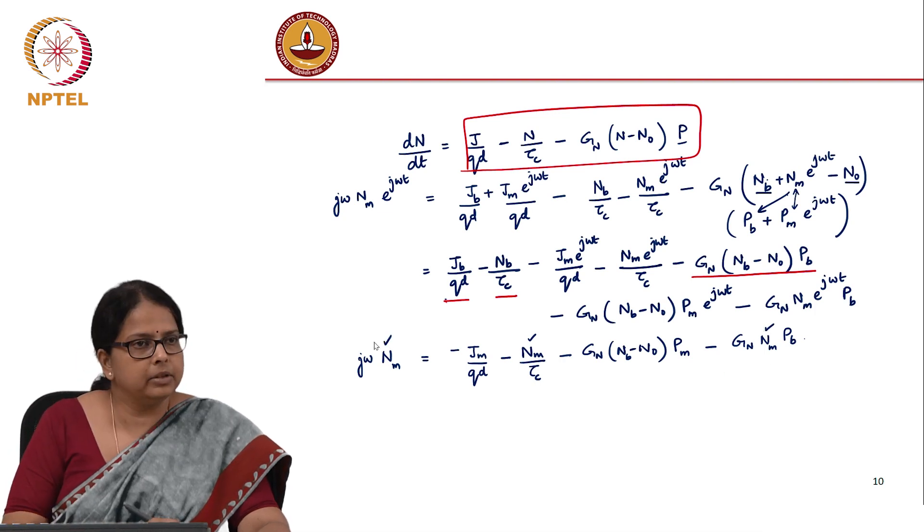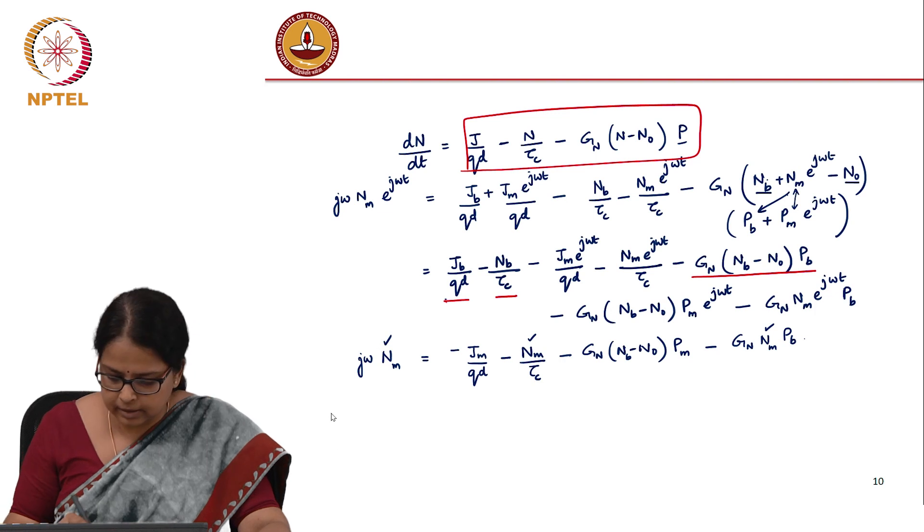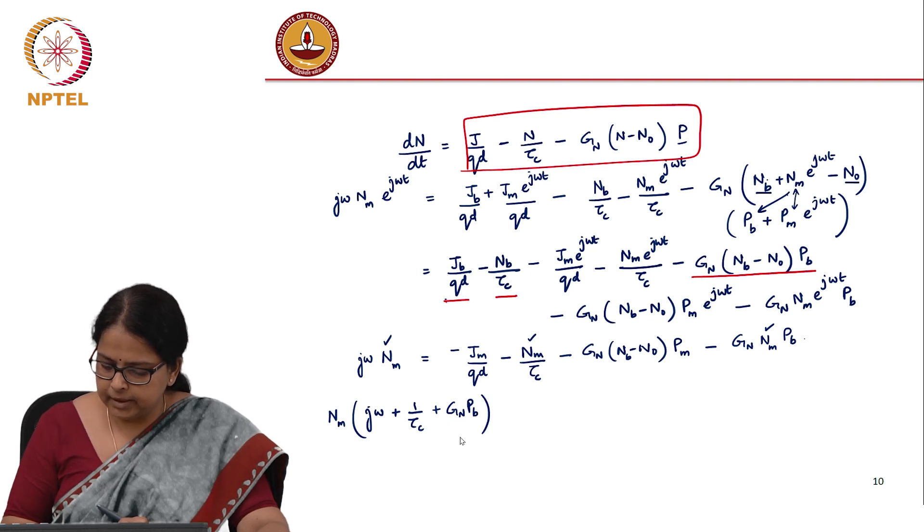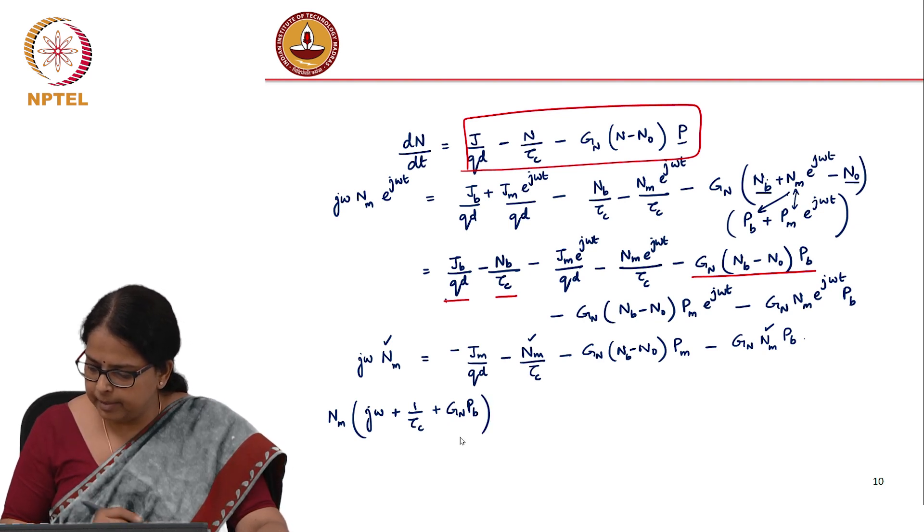There are three terms with n_m. Let us accumulate all three terms together. n_m times (j*omega + 1/tau_c + g_n*p_b). These are the terms which has n_m in it.